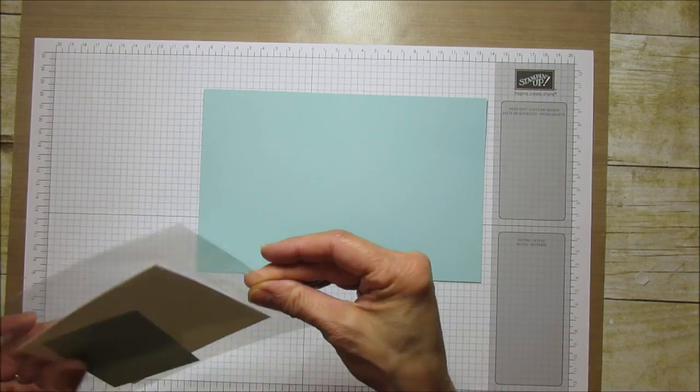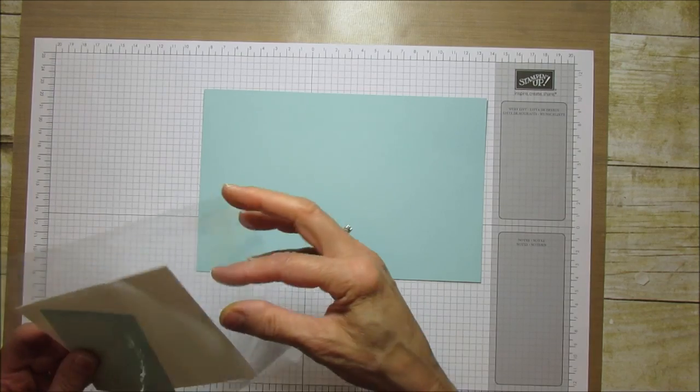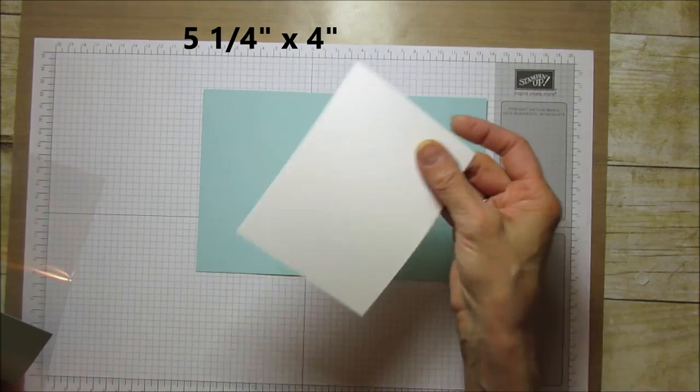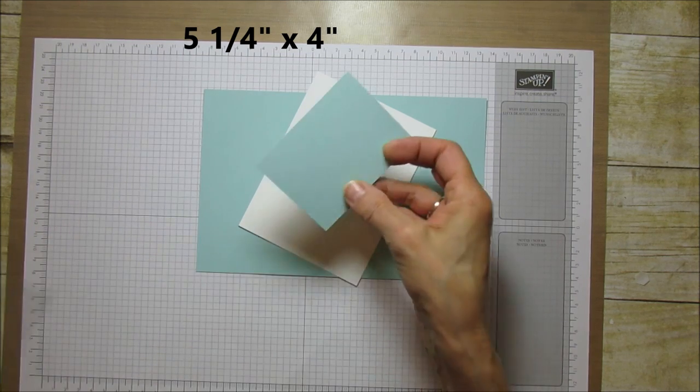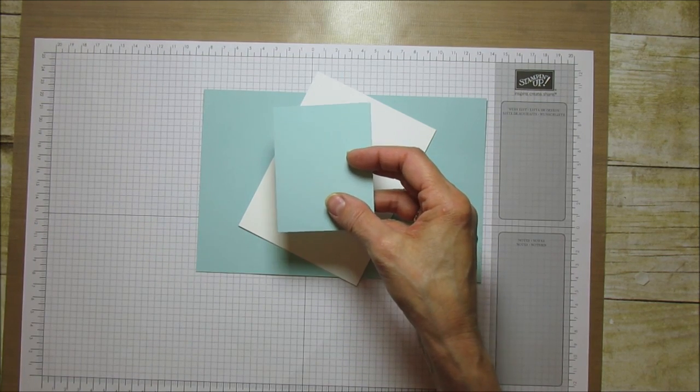Then you're going to need another piece that's five and a quarter by four - this is what we'll stamp on. And then the other piece you'll need is just to stamp the extra balloon on.